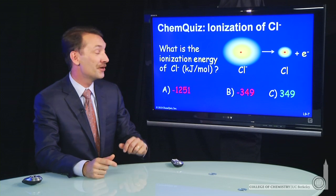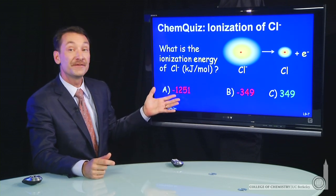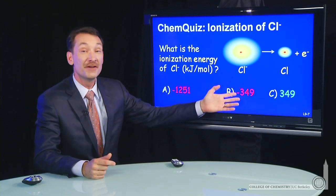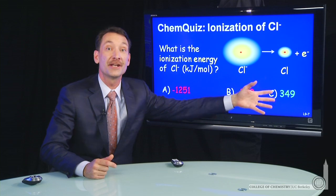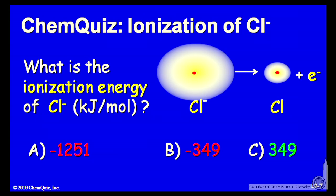So if we have Cl minus, will the ionization energy be 1251 minus, 349 minus, or 349 plus? Think about those three possibilities and make a selection.